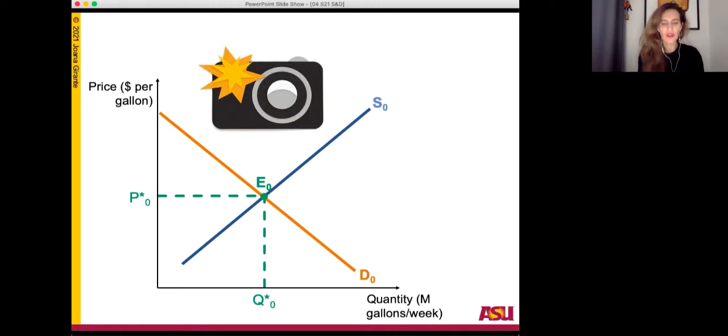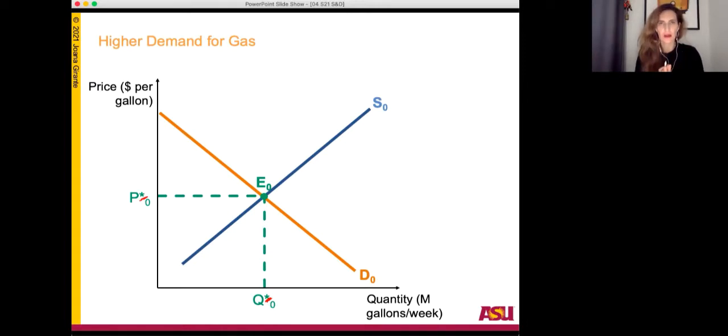In general, we use these asterisks to denote a situation of equilibrium. Now let's shock this market. Let's begin with the higher demand for gas. We know that our demand curve is going to shift to the right. So let's shift it. If this was the only change that we were studying, just the higher demand for gas, we would take another photograph of our market, identify equilibrium, see what happened to price and quantity, we would be done.